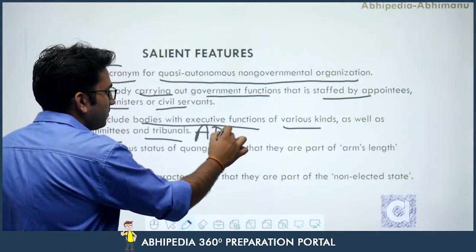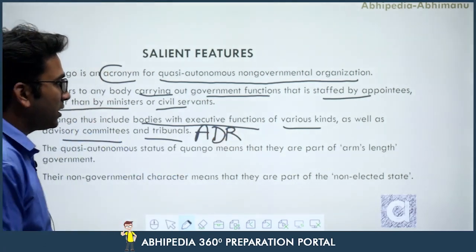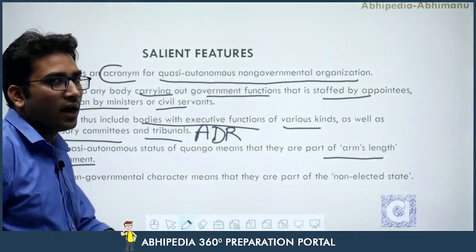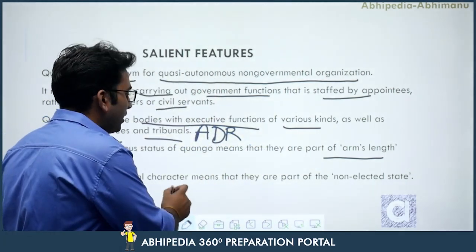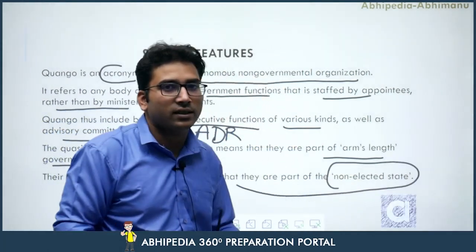The quasi-autonomous status of QUANGOs means they are part of arms-length government — having some sort of direct or indirect association with the government. The non-governmental character means they are part of the non-elected state; they are a kind of self-help group constituted to deliver inputs for society's development, upliftment, and inclusiveness.